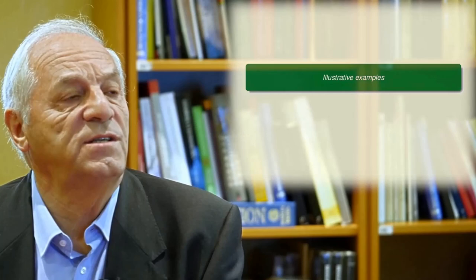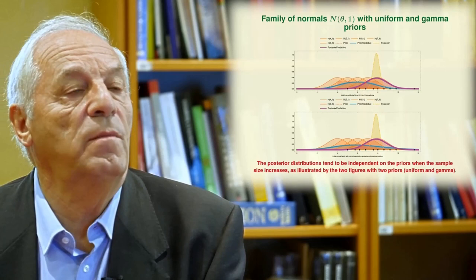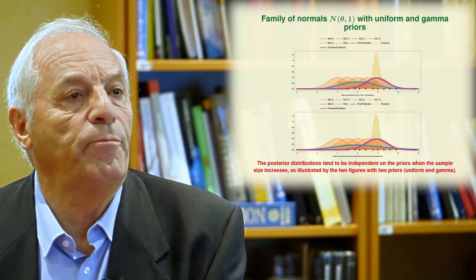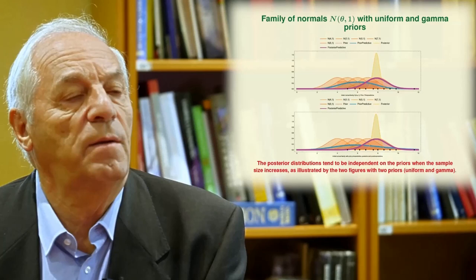Some illustrative examples are given in the course. For example, one of the examples considers a family of normals — normals with mean theta and standard deviation 1. We consider two possibilities: uniform priors or gamma priors, and then we calculate the predictive distributions and the posterior. You can see and understand, through different examples with graphical plots, the meaning of each of the elements of the Bayesian methods.